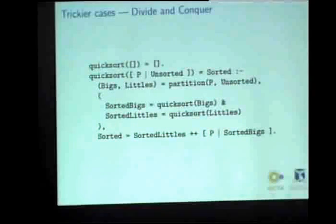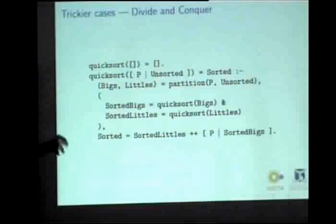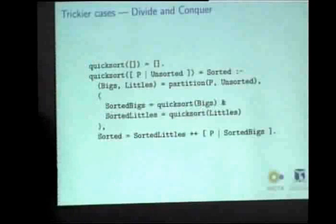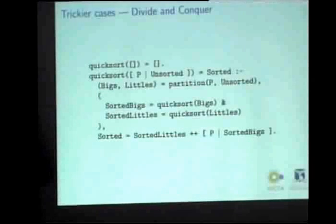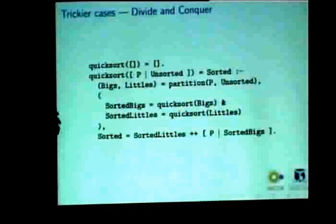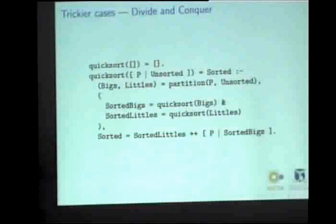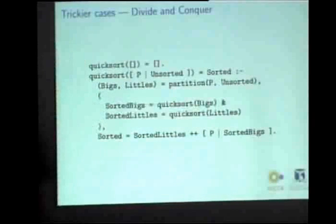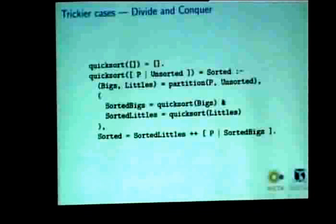The very easy way to parallelize this is to operate the two recursive quicksort calls in parallel. This is naive. Here you can see, this is the annotation for parallel evaluation, the ampersand symbol. It's the conjunction operator in Mercury. The sequential conjunction operator is the comma, and it's at the end of this first line here.